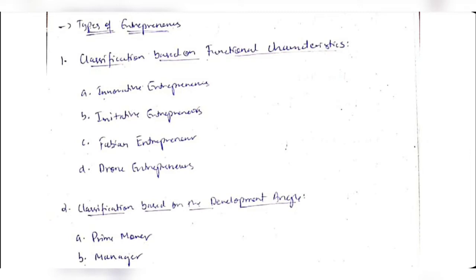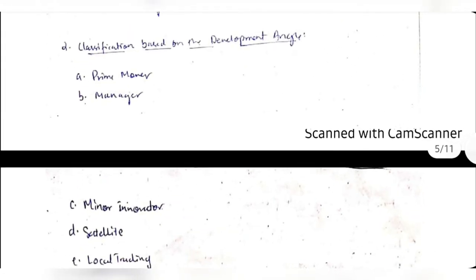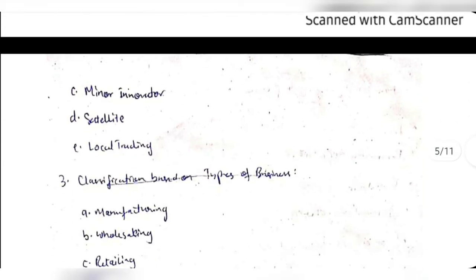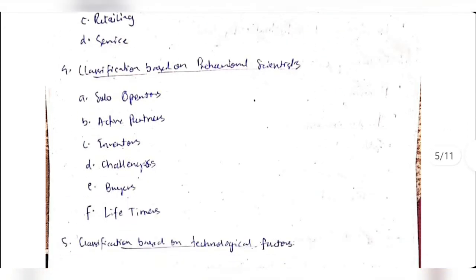Types of entrepreneurs are classified in different ways. Based on functional characteristics: innovative (generates new ideas), initiative (totally changes the goals of the company), fabian and drone (unwilling to change unless it directly affects the very existence of the company). Based on the development angle: prime mover makes big changes, manager handles sub-domains, minor innovator gives ideas, satellite tracks overall happenings, and local area types.